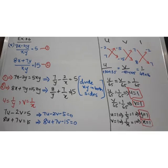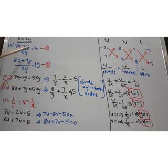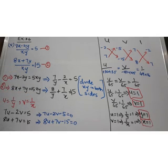Next question: 7x minus 2y by xy equal to 5 and 8x plus 7y by xy equal to 15. Here there is an xy term that should be eliminated before solving. For that, first cross multiply to make the equations: 7x minus 2y equal to 5xy, and 8x plus 7y equal to 15xy.